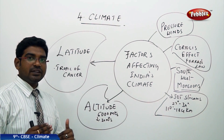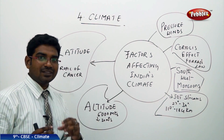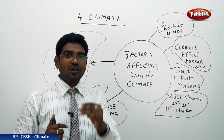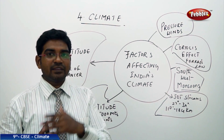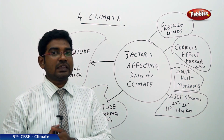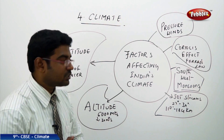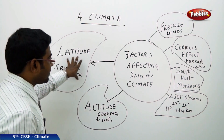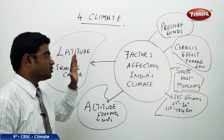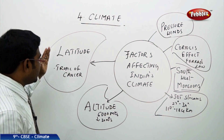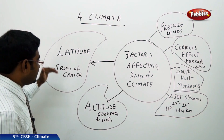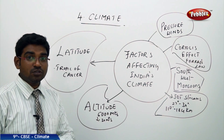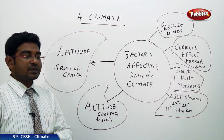Northern India receives much less heat when compared to southern India, because northern India falls into the subtropical zone while the south falls into the tropical zone. Like this, temperature is influenced by the latitudes of India, especially the Tropic of Cancer, because the Tropic of Cancer passes through the center of India.